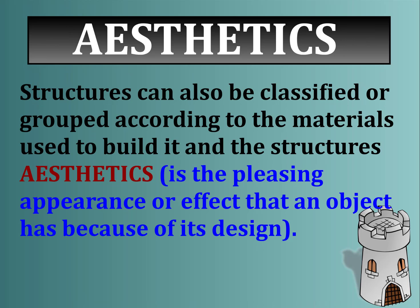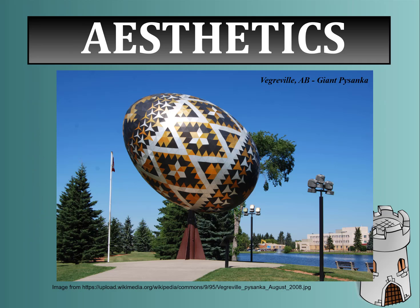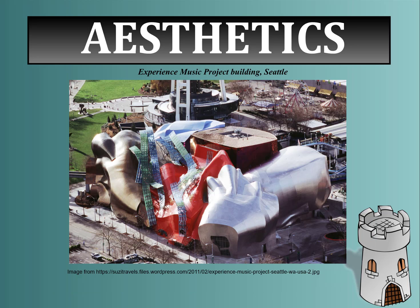Structures can also be classified according to the materials used to build them and their aesthetics. Aesthetics is the pleasing appearance or effect that an object has simply because of its design. Something aesthetically pleasing might be the Vegreville giant Pysanka, located in northern Alberta — it's a Ukrainian egg. Pysanka eggs were painted using a type of wax and a very special pen to create a very intricate design.